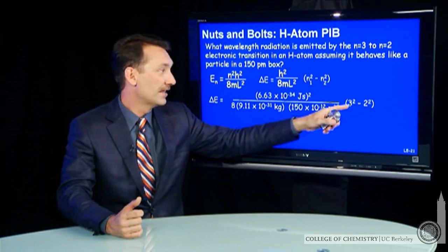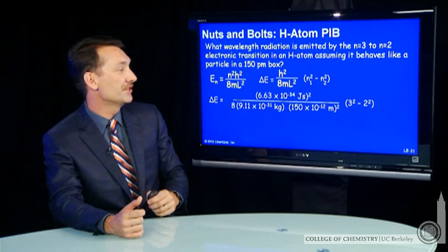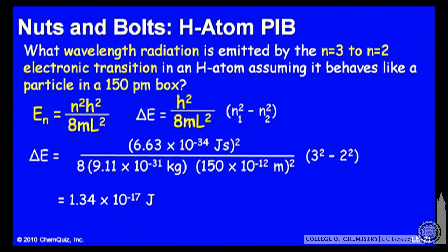And n=3 to n=2 in our transition. That gives us an energy of 1.34 × 10⁻¹⁷ joules.